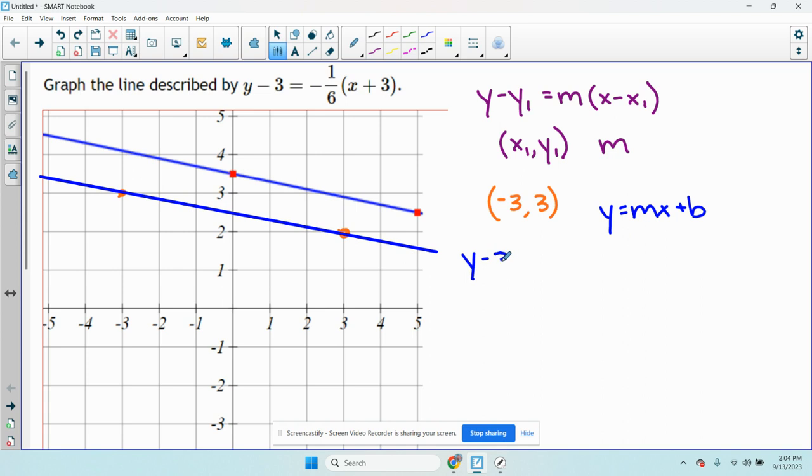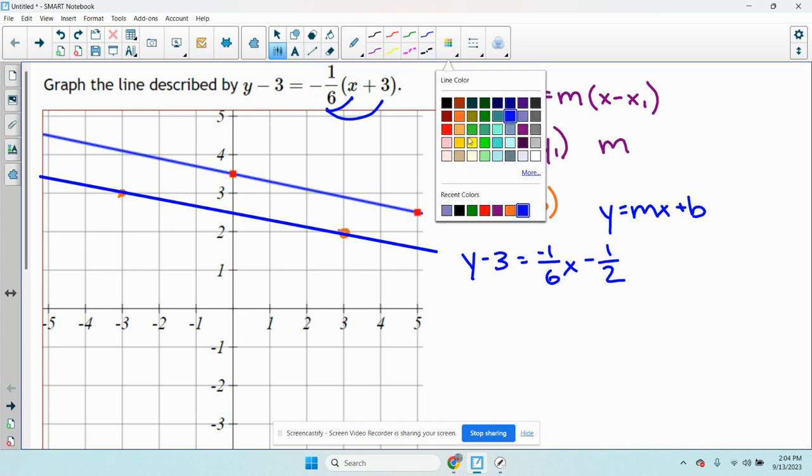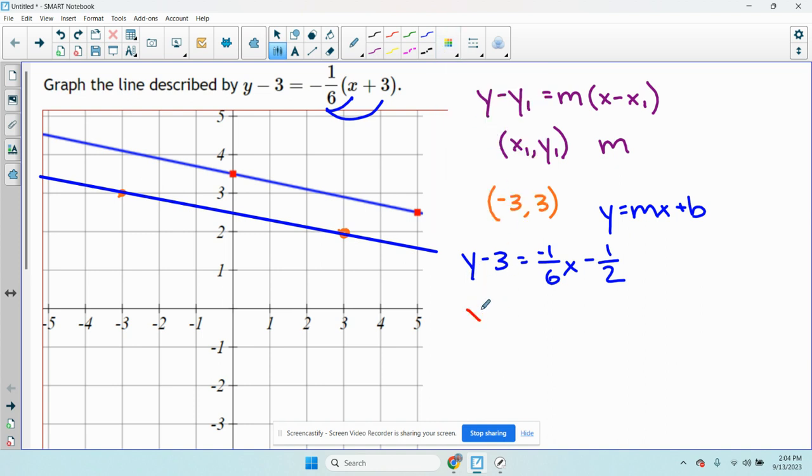So I have y minus 3 equals negative 1 sixth x. And then negative 1 sixth times 3 is going to give me negative 1 half. That would be 3 over 6. That reduces to 1 half. Then it's a matter of just adding 3 to both sides.